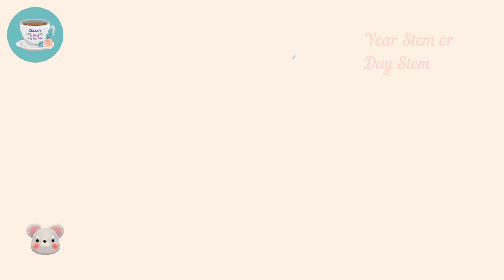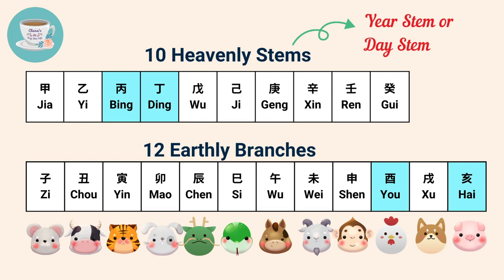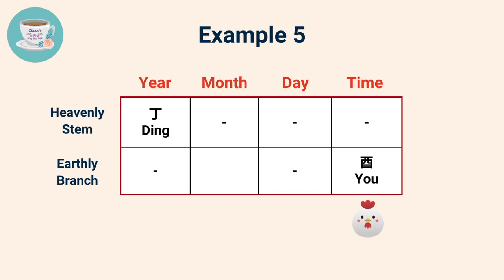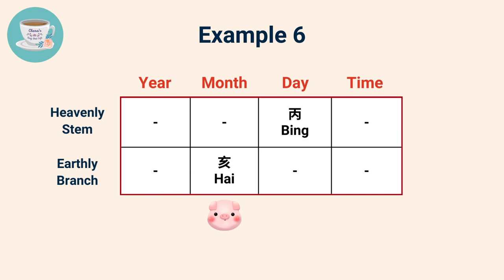If your year stem or day stem belongs to either Bing or Ding, then your Nobleman star is either You or Hai. For example, if your year stem is Ding and You can be found in your earthly branch, therefore the rooster is your Nobleman star. If your day stem is Bing, then the pig is your Nobleman star in the earthly branch.